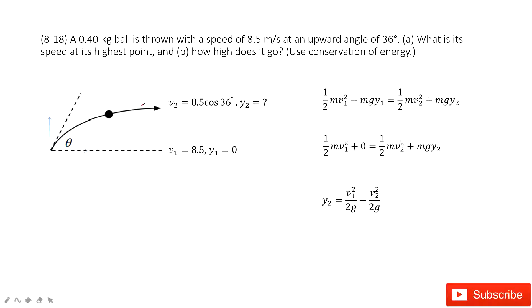We can see this is the projectile motion. At initial, this ball is there, the object is there. The initial velocity is 8.5 m per second, and the initial position, we call it Y1, is 0.